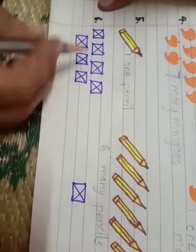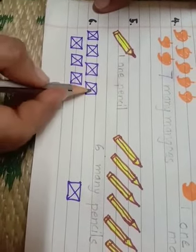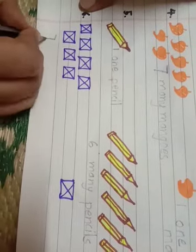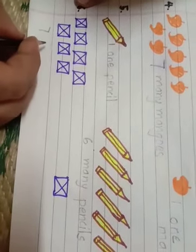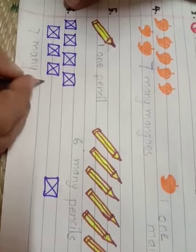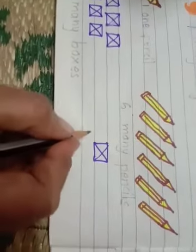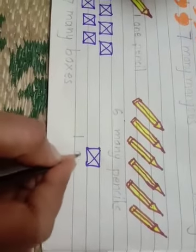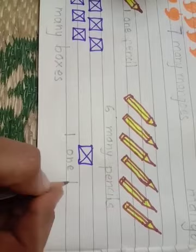Here, boxes are there. One, two, three, four, five, six, seven. Seven boxes. So, we will write here, many boxes. And here, only one box. So, we will write here, one box.